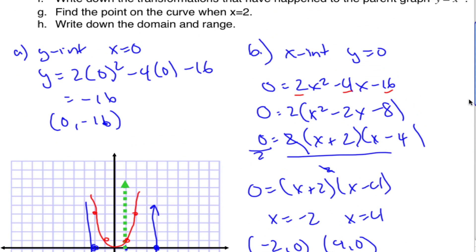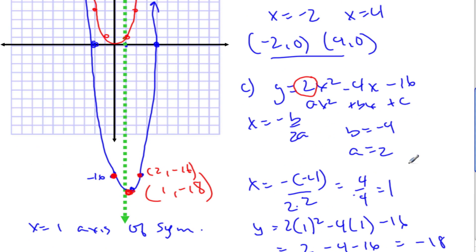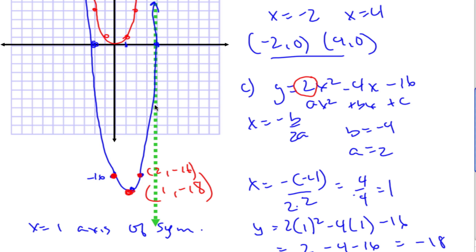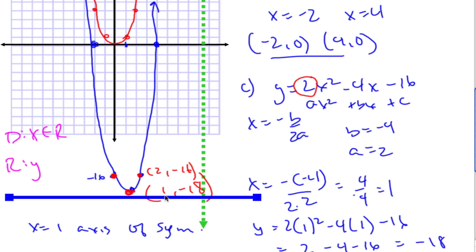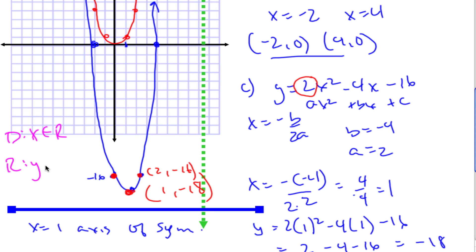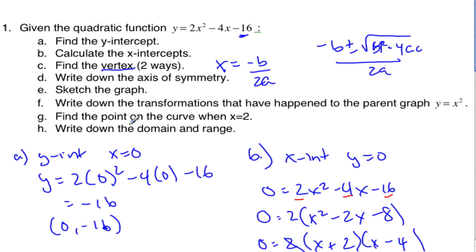For domain and range: the domain is the set of all real numbers, since the parabola extends infinitely left and right. For the range, horizontal lines touch the graph everywhere above the vertex but stop at the vertex itself, so the range is y ≥ −18. There's a lot of information here — some reviewed from previous forms — but the key values are a, the y-intercept (c), and the vertex.